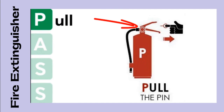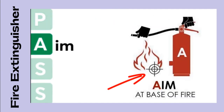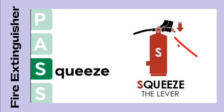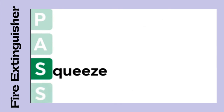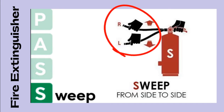The method of using a fire extinguisher is commonly known by the single word PASS. P: pull the pin fixed in the handle. A: aim at the base of the fire. S: squeeze the lever of the cylinder. S: sweep from side to side.